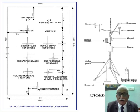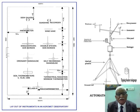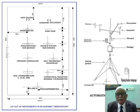As seen from the figures, this is the layout of instruments in an agro-meteorological observatory and automatic weather station. There are several instruments: rain gauge, ordinary or non-recording rain gauge, self-recording rain gauge, soil thermometers, wind vane, sunshine recorder, and USWB Class A open pan evaporimeter, among others.